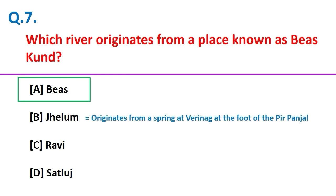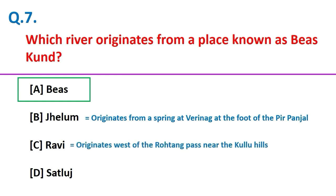Jhelum originates from a spring at Verinag at the foot of the Pirpanchal. Ravi originates west of the Rothang Pass near the Kullu Hills. And Sutlej originates in the Rakas Tal near Mansarovar.